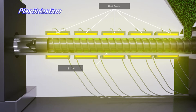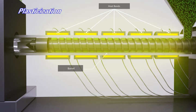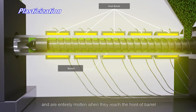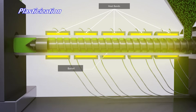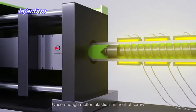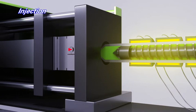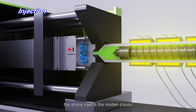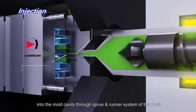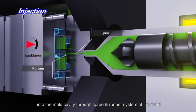As the pellets are moved forward, they are gradually melted and are entirely molten when they reach the front of the barrel. Once enough molten plastic is in front of the screw, the screw injects the molten plastic into the mold cavity through the sprue and runner system of the mold.